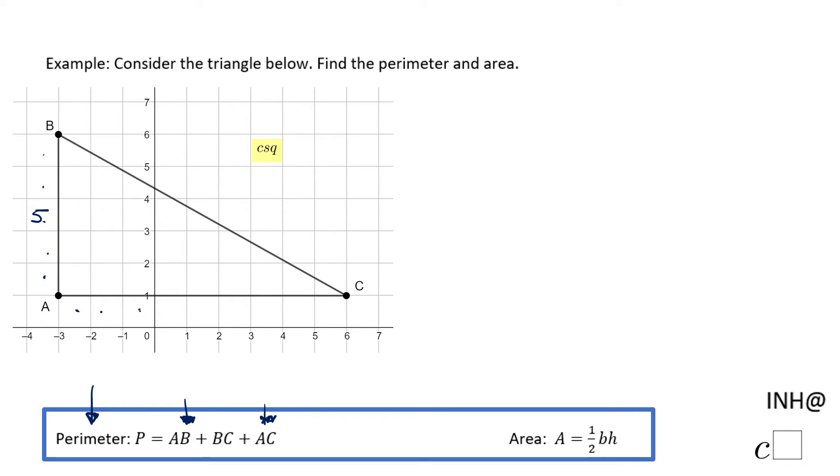The same for AC, we need to count to find how long AC is: one, two, three, four, five, six, seven, eight, nine. The only one we need to work to find out how long it is is BC. And I said at the beginning this is a special triangle, this is a right triangle.